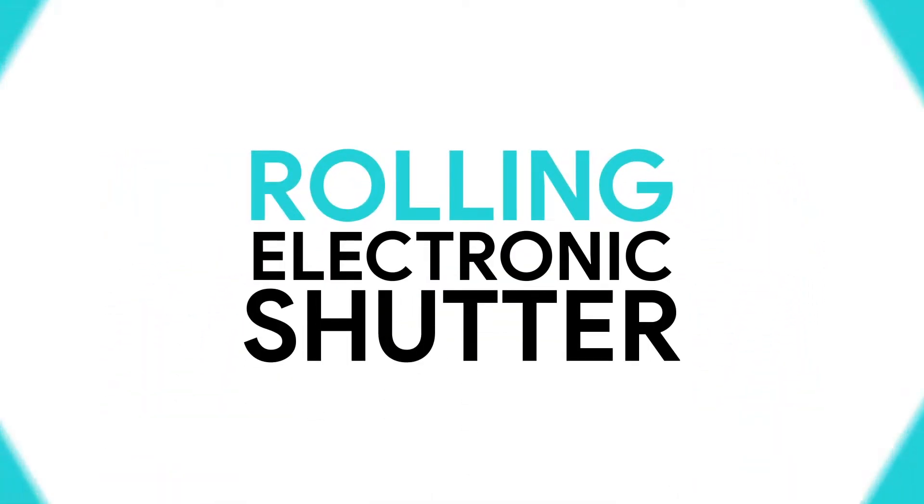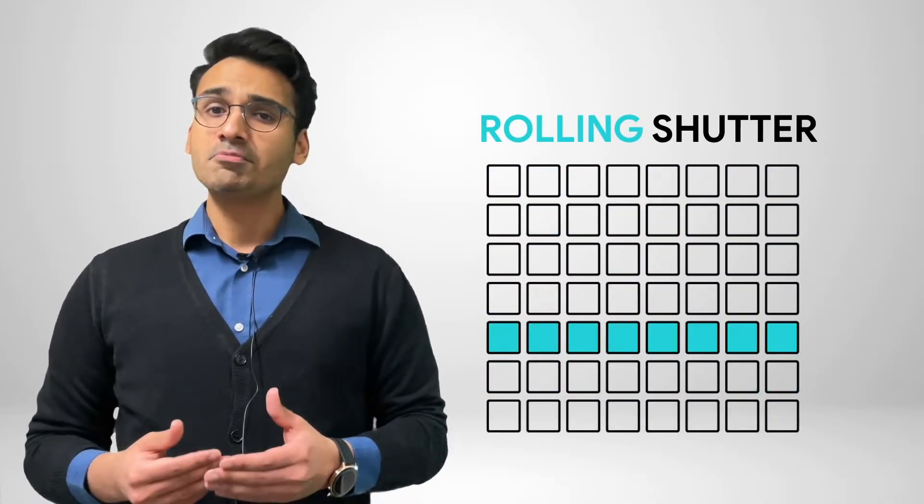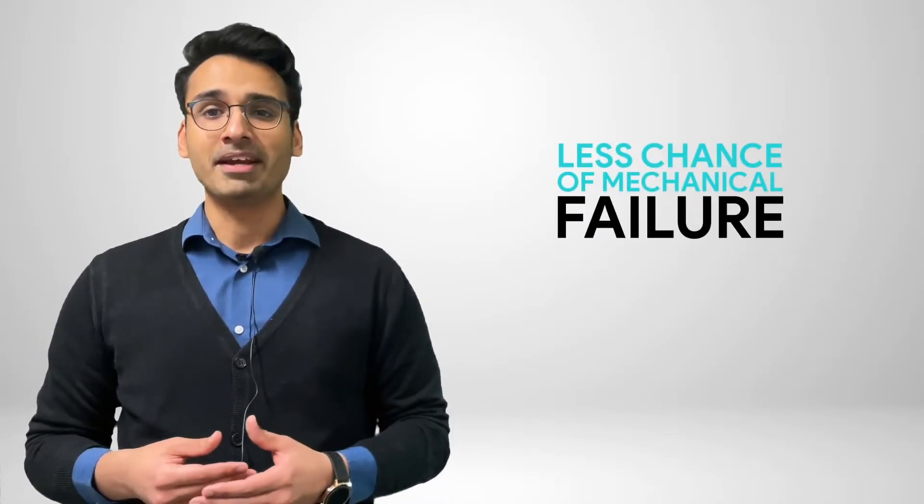Now let's have a look at rolling electronic shutters. A rolling electronic shutter on the other hand is a non-mechanical, that is electronic shutter which exposes pixels on the image sensor in a line-by-line order. This means that a rolling shutter is not as good at capturing fast moving subjects or being used on a moving platform such as a commercial drone. However since a rolling shutter is typically electronic, that is non-mechanical in nature, they have less chances of mechanical failure.